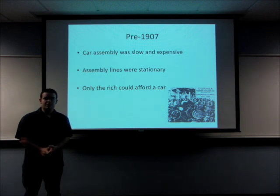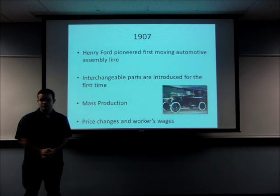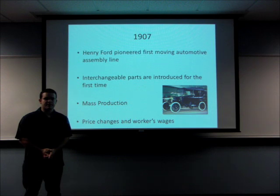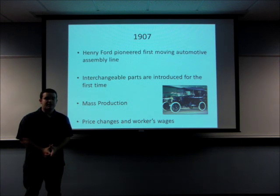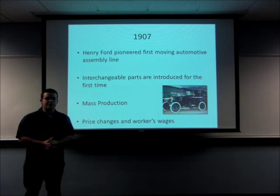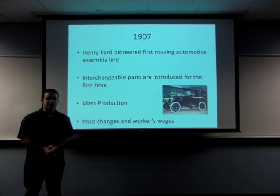As a result of this, only the rich could afford a car. By 1907, Henry Ford pioneered the first moving assembly line, which revolutionized the car assembly process until even the present day. The introduction of interchangeable parts by Henry Leland, the founder of the Cadillac Car Company, allowed for mass production of vehicles. In fact, Henry Ford produced 15 million Model T Fords from 1907 to 1927.